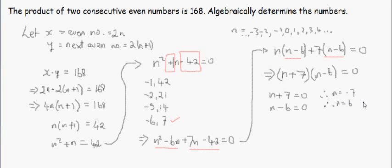So these are the two possible solutions for n. Let's see if they work. We know that x is equal to 2n. So x is either equal to negative 14 or positive 12.